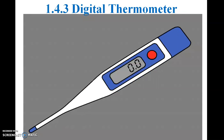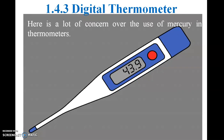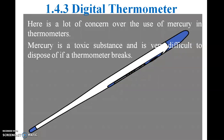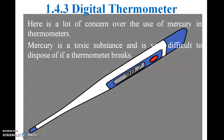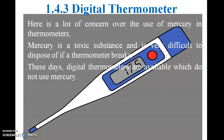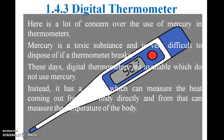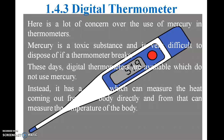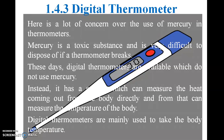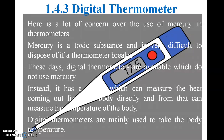This is the digital thermometer. There is a lot of concern over the use of mercury in thermometers because mercury is a toxic substance and it is very difficult to dispose of if a thermometer breaks. A digital thermometer does not use mercury. Instead, it uses sensors to measure the heat coming directly from the body. Digital thermometers are mainly used to take body temperature.